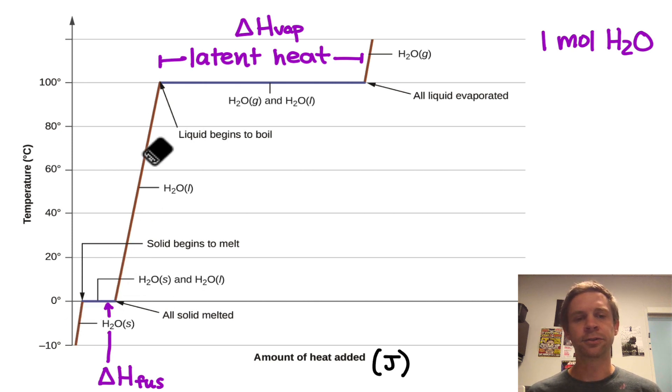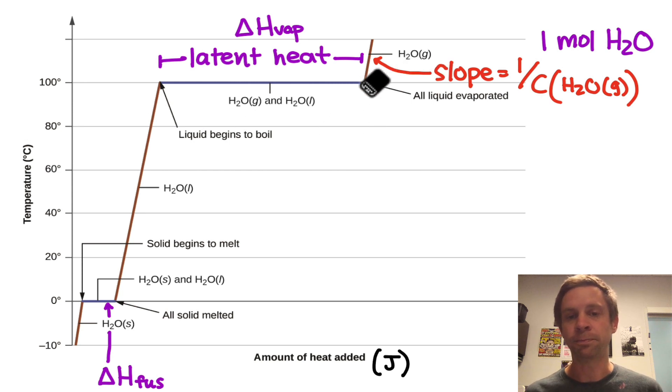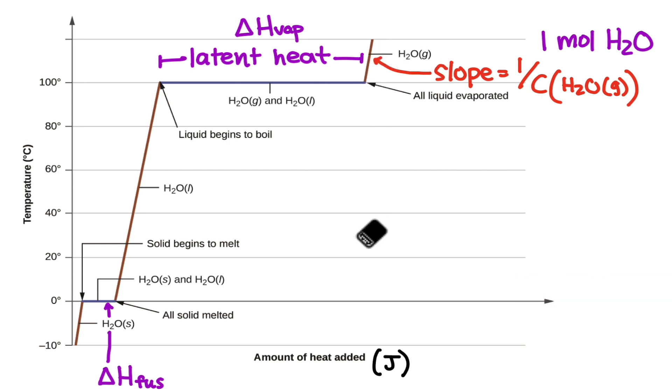Now, the slopes of the lines are also worth paying attention to here. One thing to note about a heating curve graph is that we have heat or energy on the x-axis and temperature on the y-axis. And we've seen quantities that relate heat and temperature before, namely heat capacities and specific heats. So the slopes of these lines are related to the heat capacity of the substance. For example, this line tailing off here is related to the heat capacity of water vapor. Specifically, the slope is one divided by the heat capacity of gaseous water.